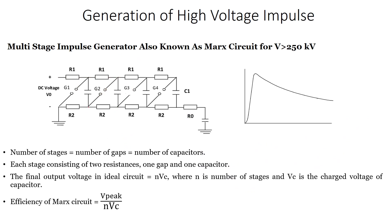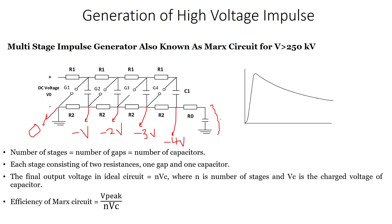Continuing with the same concept: the first node is zero, the next is negative V, then negative 2V, then negative 3V, and finally negative 4V. So the output at the final node has a peak impulse magnitude of 4V — which in the ideal case equals 4 times the supply voltage V.